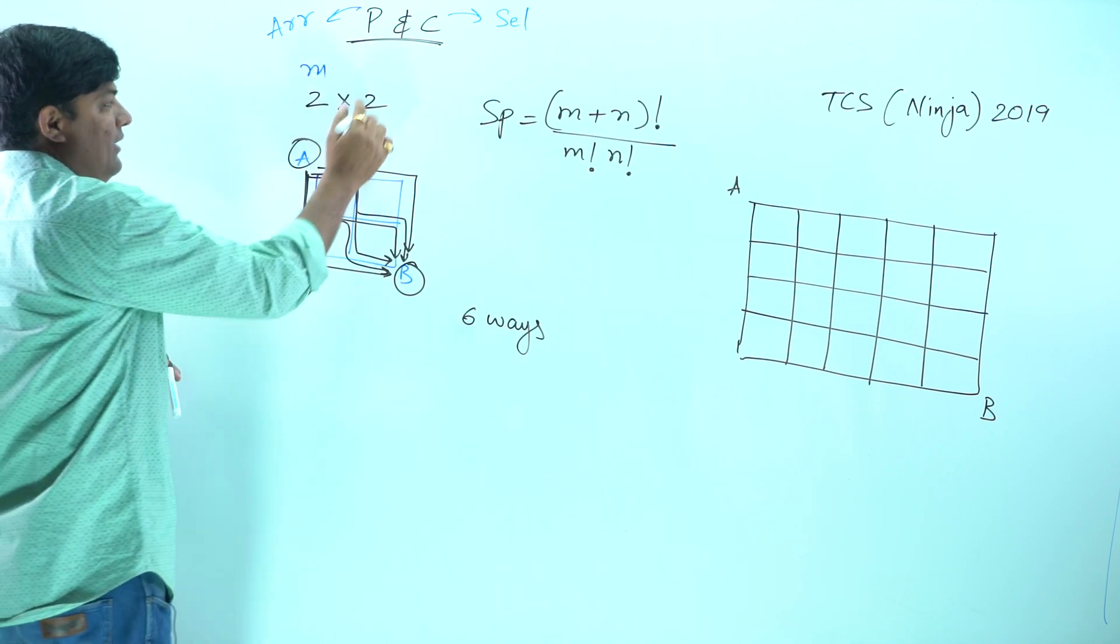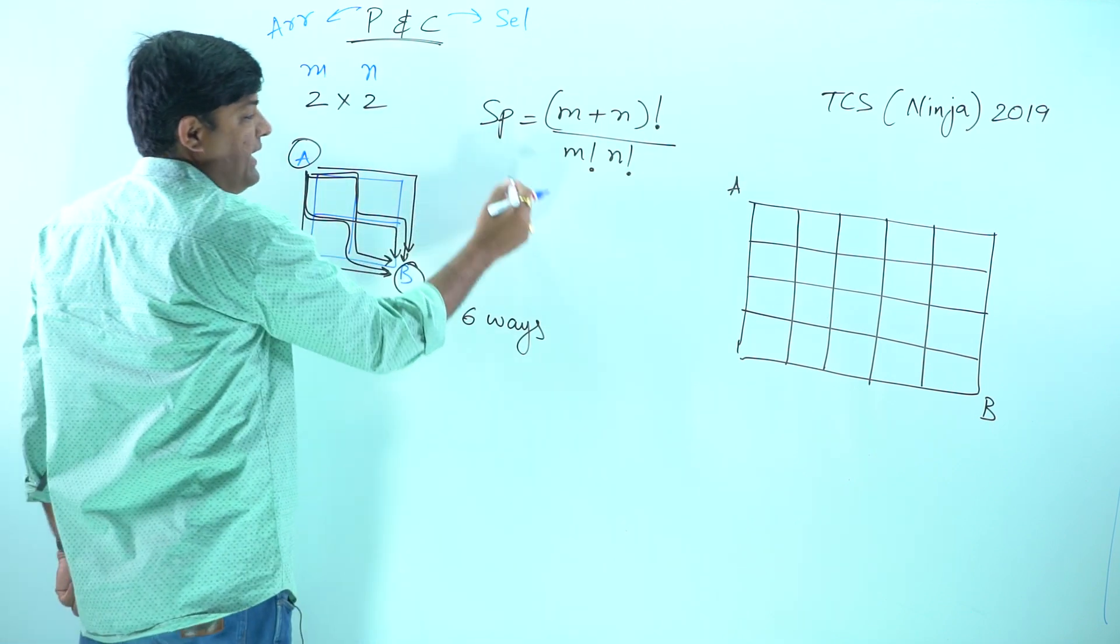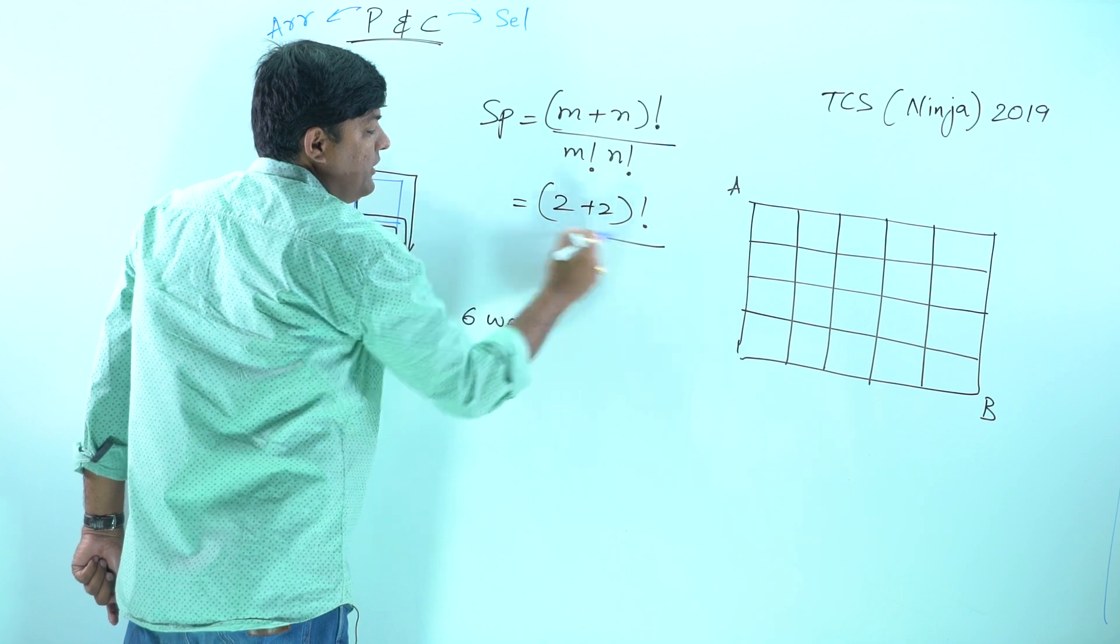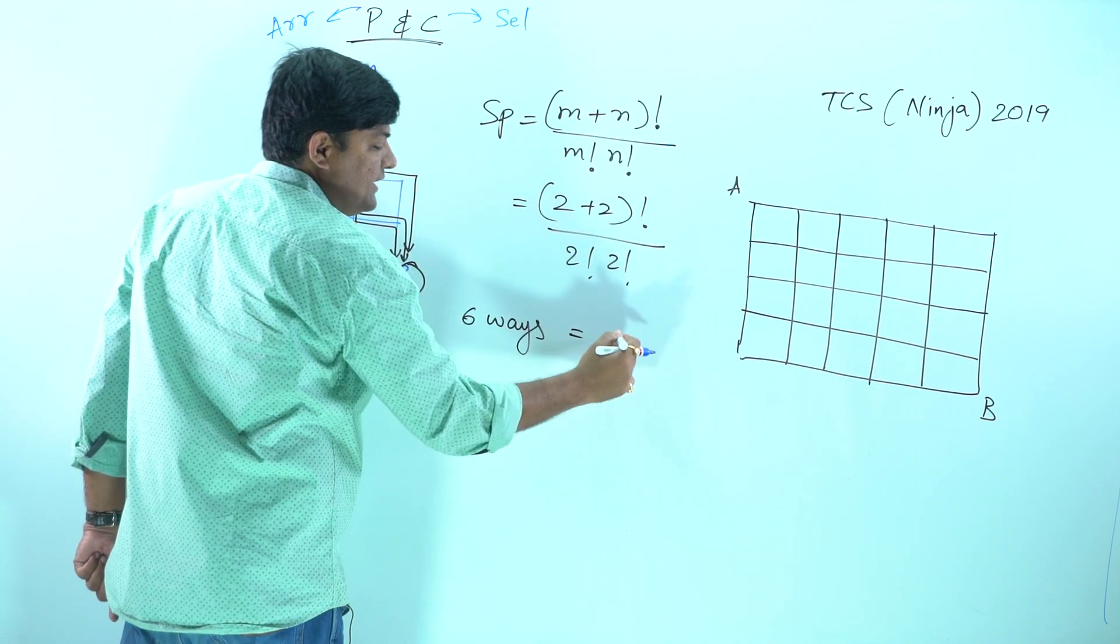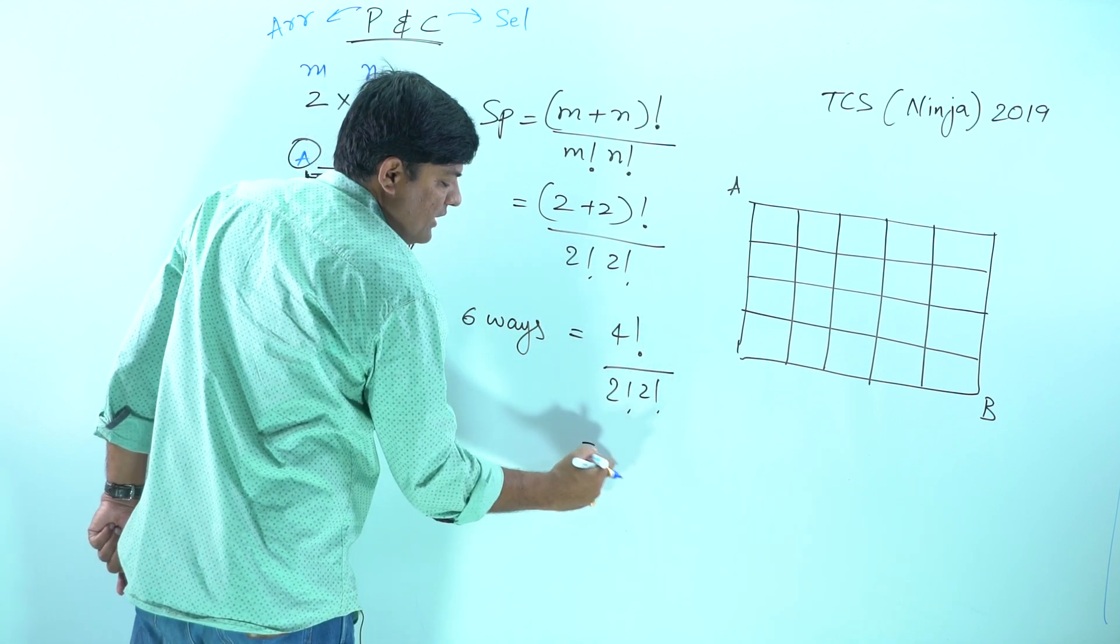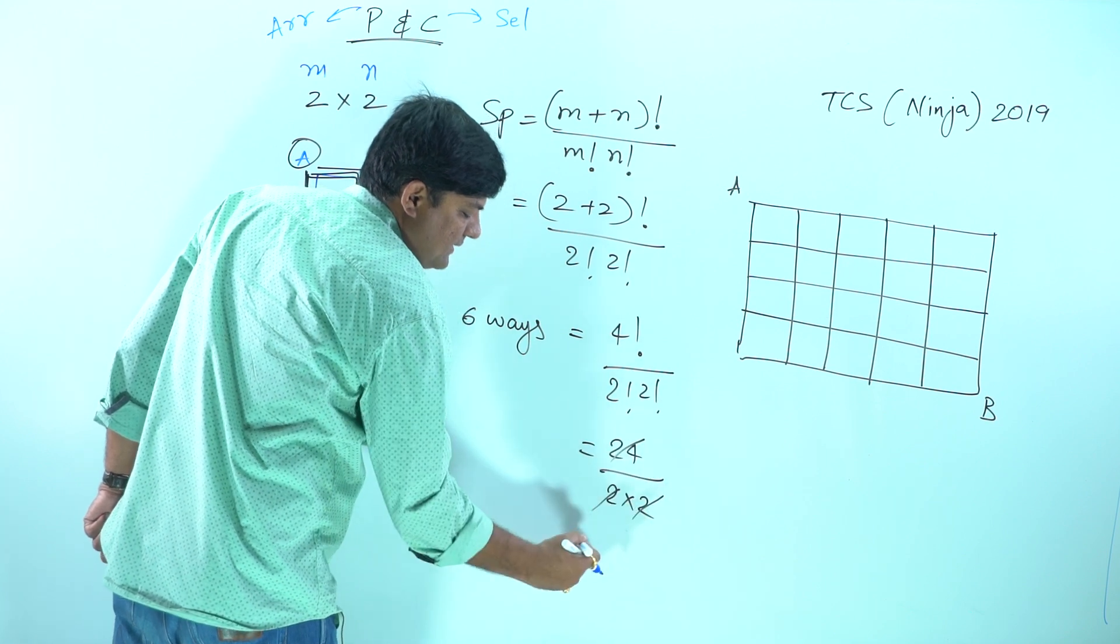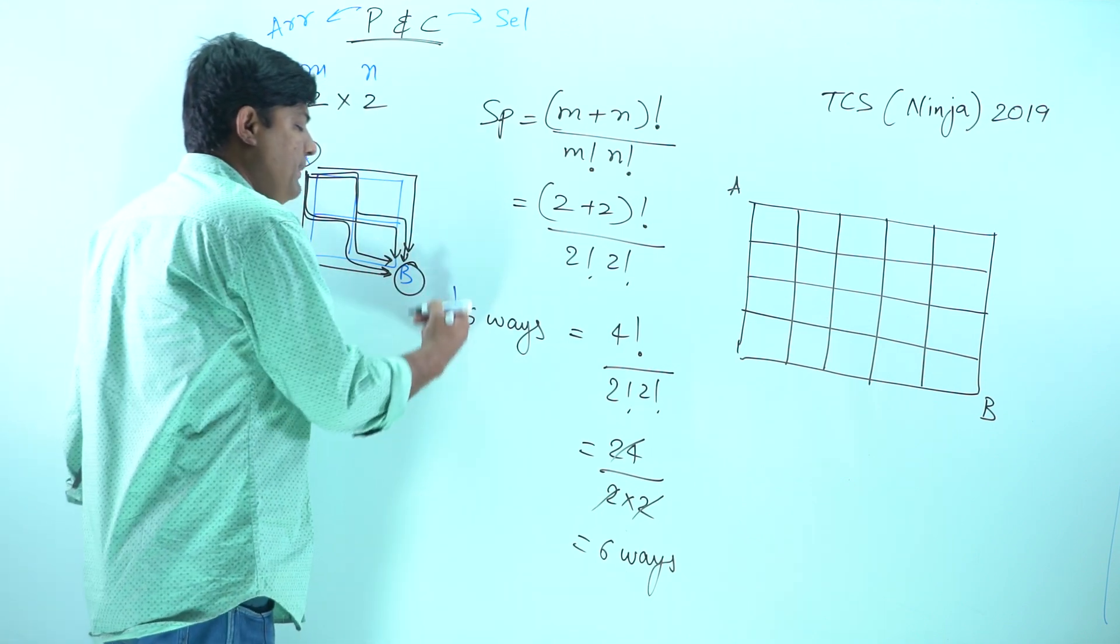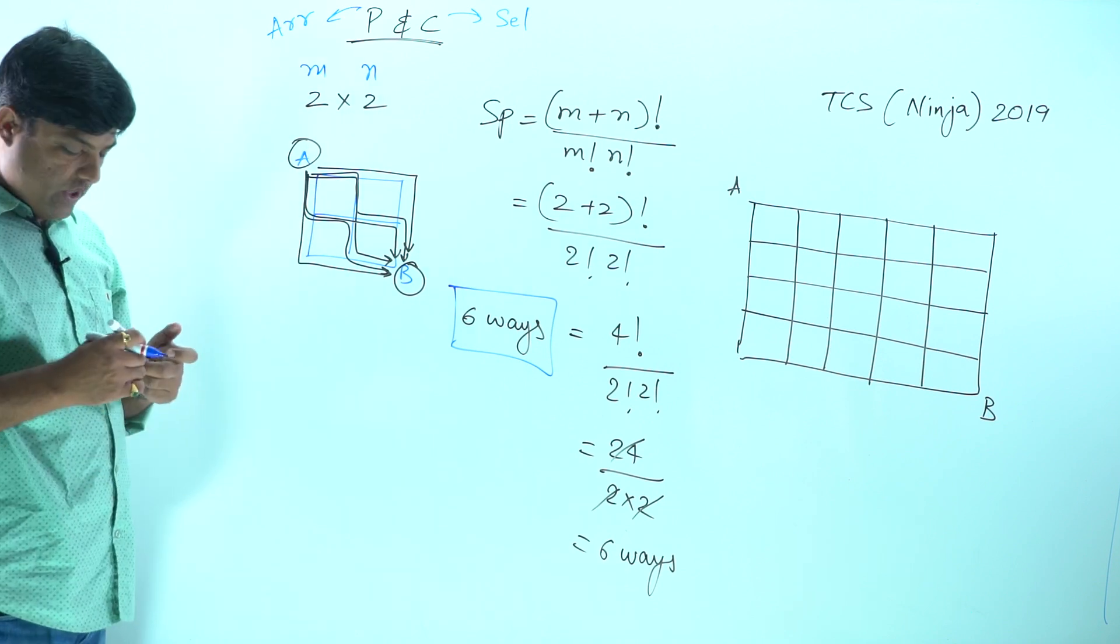Using these two, we can find out the shortest path. Here (2+2)! upon 2! 2!, that is 4! upon 2! 2!, which makes 24 upon 2 into 2, which makes 6 ways. So we can say very clearly the number of shortest paths possible is 6 ways. Instead of counting orally, we can just use this formula.